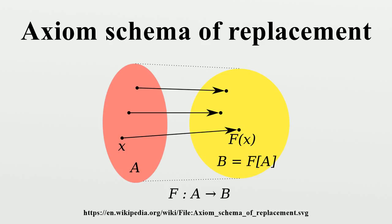Separation is still important, however, for use in fragments of ZFC, because of historical considerations, and for comparison with alternative axiomatizations of set theory. A formulation of set theory that does not include the axiom of replacement will likely include some form of the axiom of separation, to ensure that its models contain a sufficiently rich collection of sets. In the study of models of set theory, it is sometimes useful to consider models of ZFC without replacement, such as the models in von Neumann's hierarchy. The proof above uses the law of excluded middle in assuming that if A is non-empty then it must contain an element. The axiom of separation is included in intuitionistic set theory.